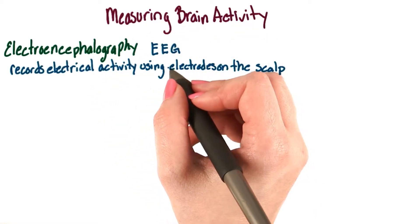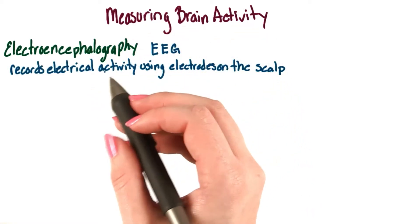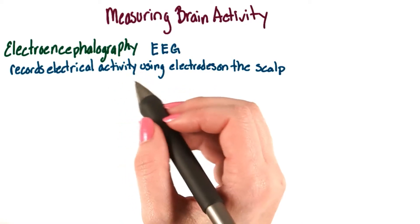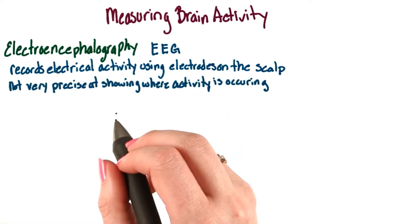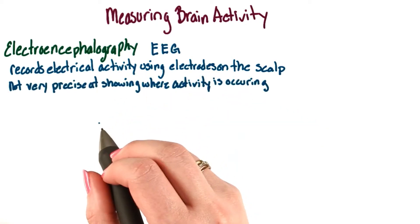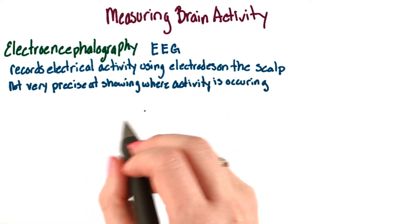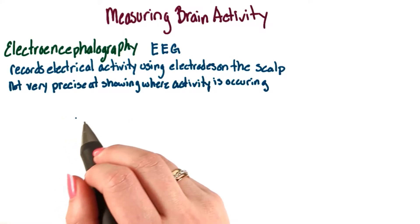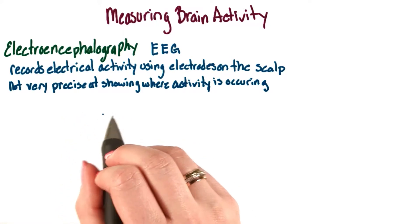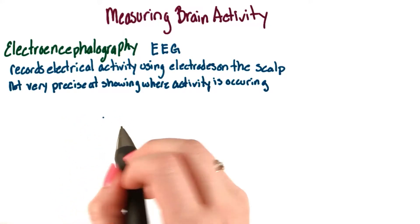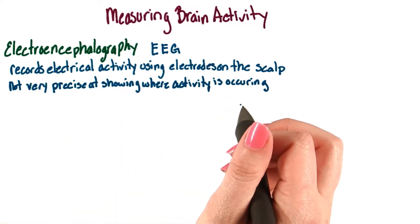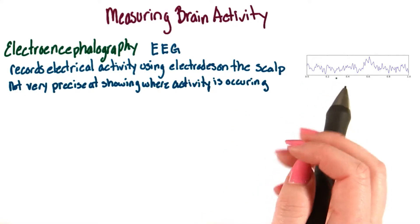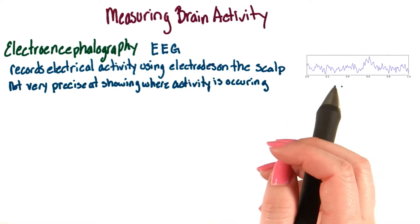It records electrical activity of the brain through electrodes placed on the scalp. This technique is really good at showing general activity of the brain, but it's not terribly precise at showing where exactly the activity is occurring. This is what a typical one would look like.